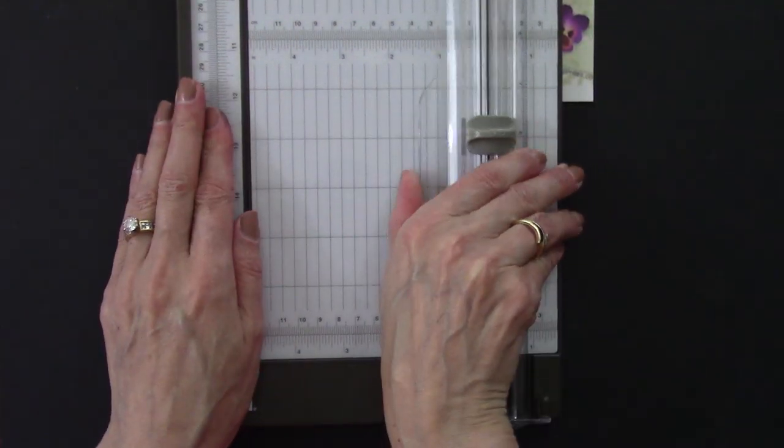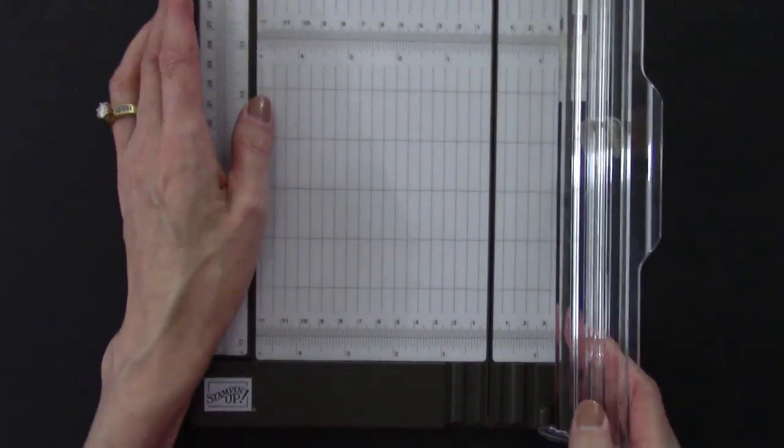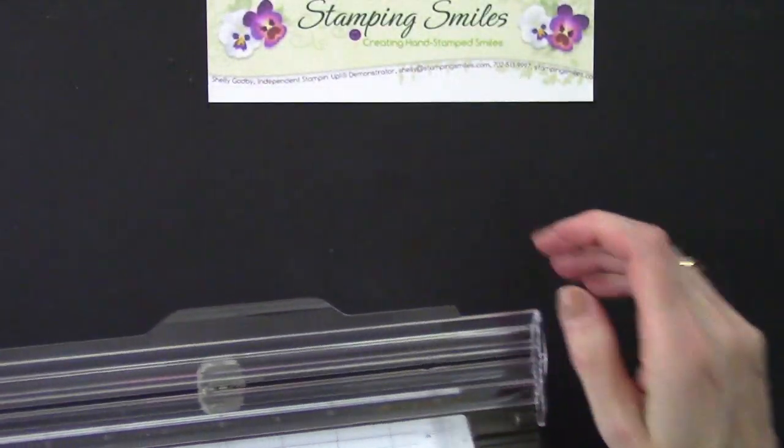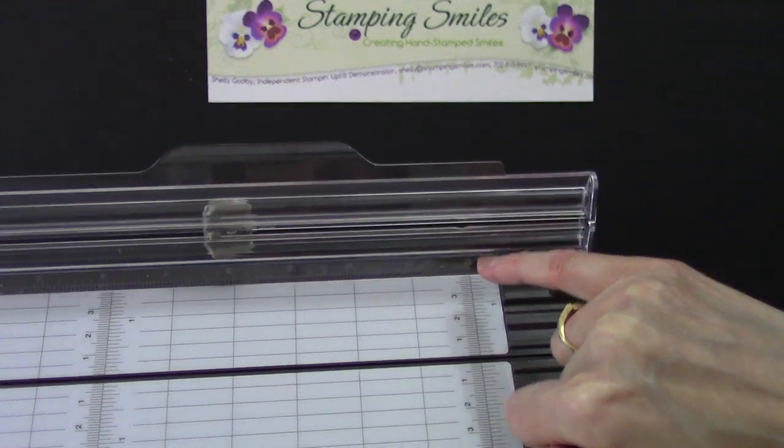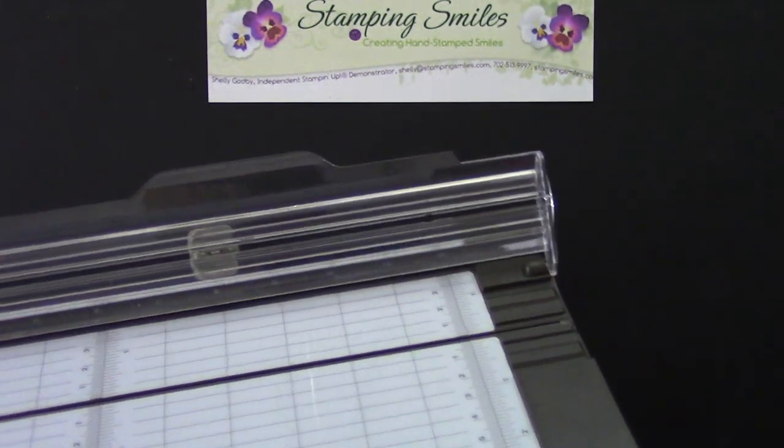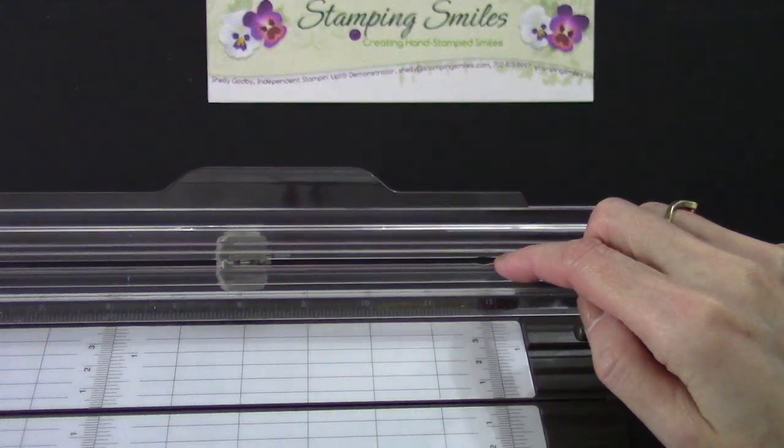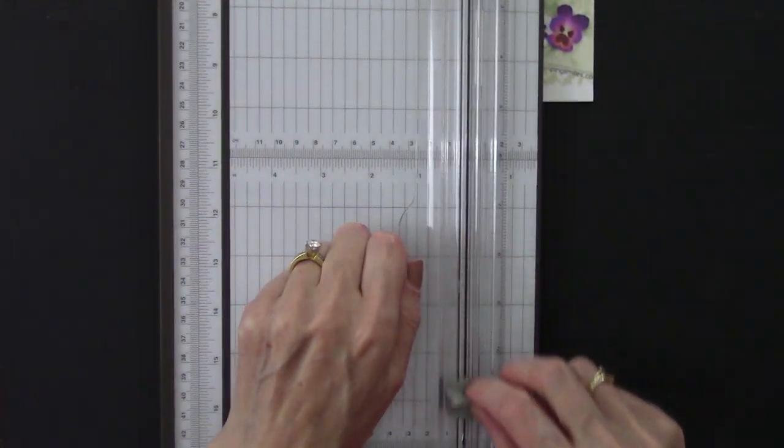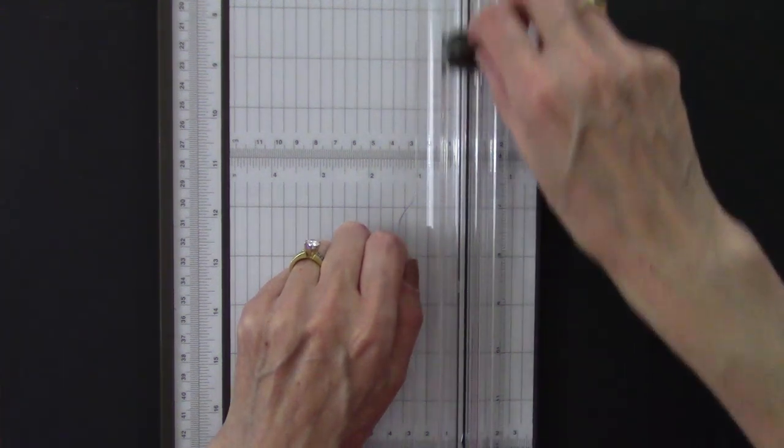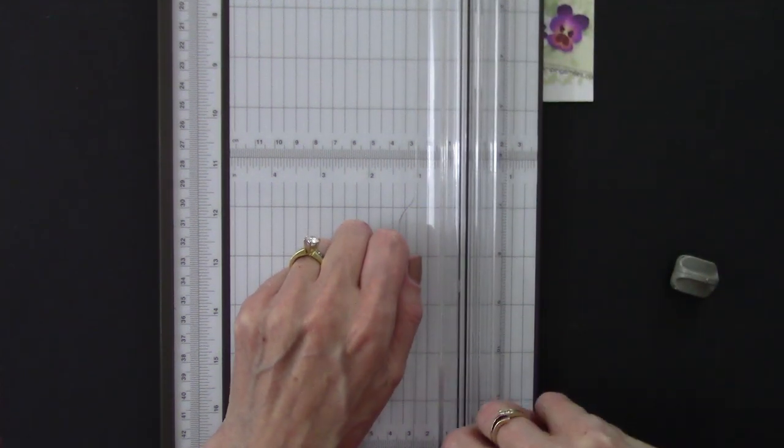And so along this track, it's straight all the way down until you get right here. And there's a little notch out of there. Well, that's how, that's where you take it to to remove when you need to replace your cutting and scoring blades.